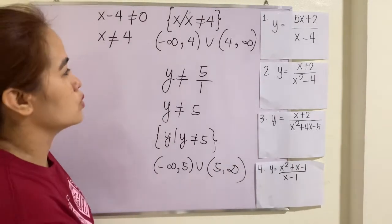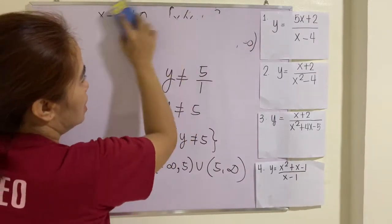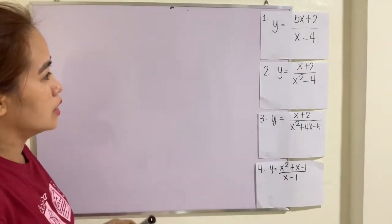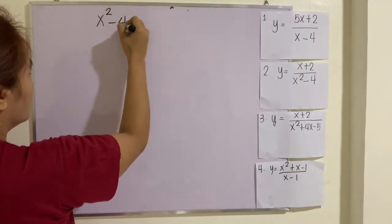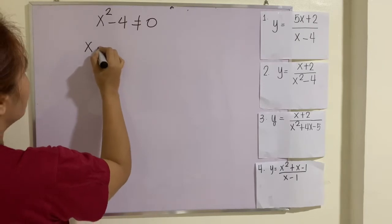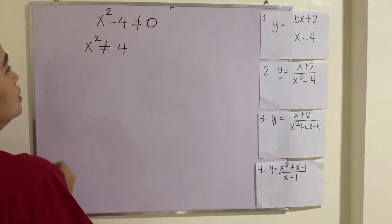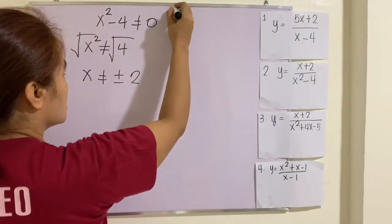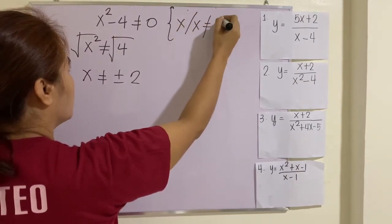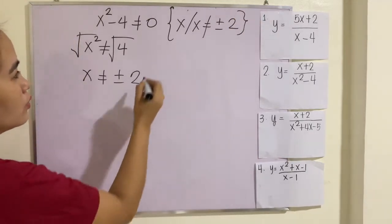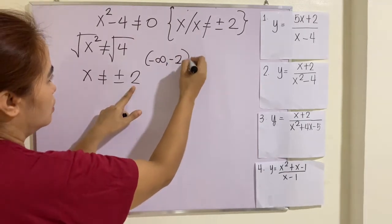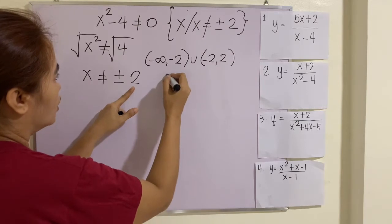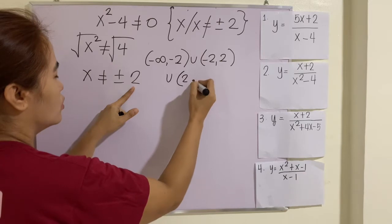Let's take example number 2. We have y equals x plus 2 over x squared minus 4. In the denominator, we set it not equal to 0. Solving for x, x squared is not equal to 4, so we take the square root — x is not equal to positive and negative 2. In set notation, this is x such that x is not equal to positive and negative 2. In interval notation, you have negative infinity, negative 2, union negative 2, positive 2, union positive 2, positive infinity.